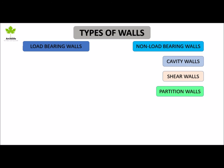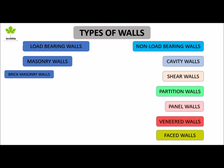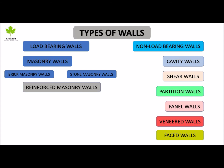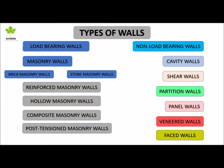Partition wall, panel wall, veneered wall, and faced wall. Load-bearing walls are further categorized as masonry wall construction, which is divided into brick masonry and stone masonry, reinforced masonry wall, hollow masonry wall, composite masonry walls, post-tensioned masonry walls, and retaining walls.